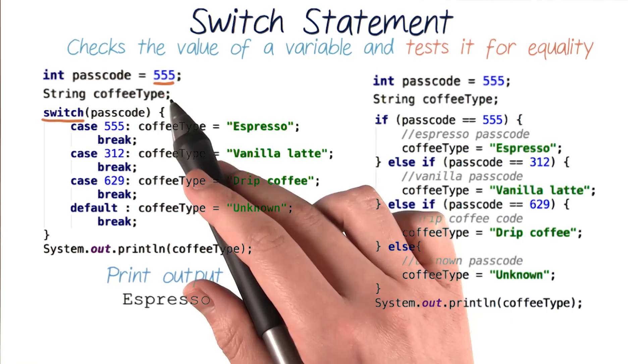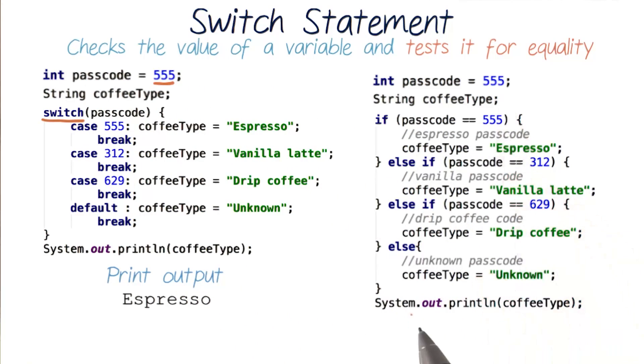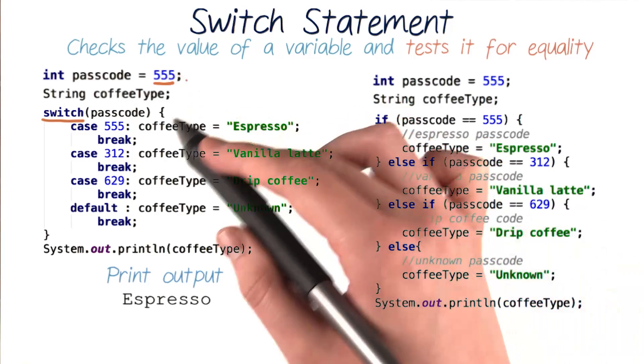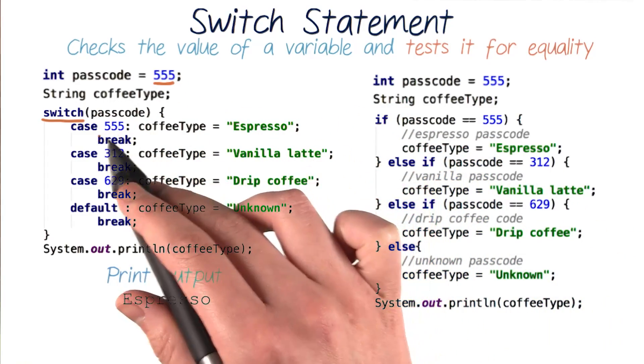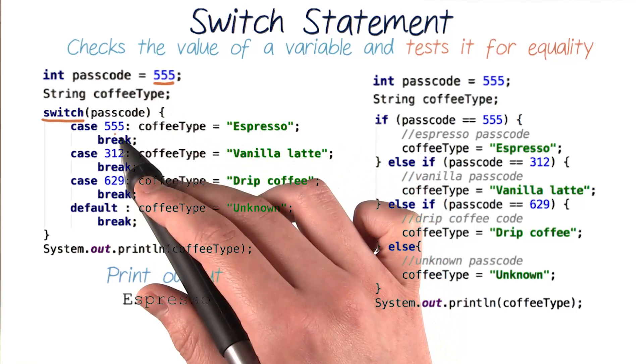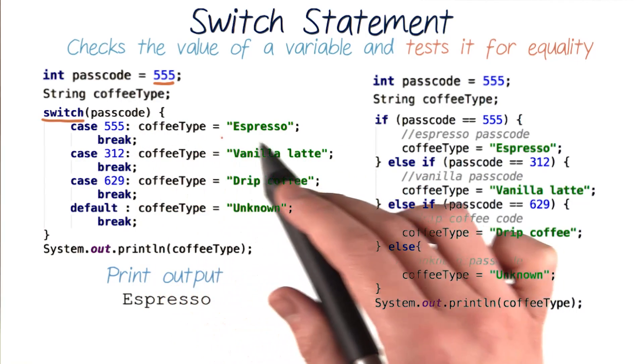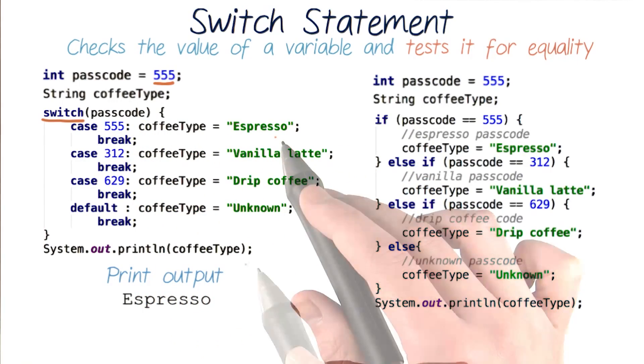So both of these sets of code do the same thing. In fact, if our passcode was 555, the print output for both of these codes would be espresso. For this code, it would enter our first if statement and set coffeeType to espresso. And for this code, it would check the value of our passcode against our first case, case 555. And because these match, it would enter this code and set our coffeeType to espresso again. So switch statements can be implemented with ifs and elses, but it can be easier and more understandable to write code in a switch if you're doing a lot of equality checks.